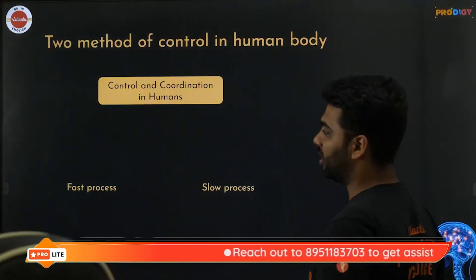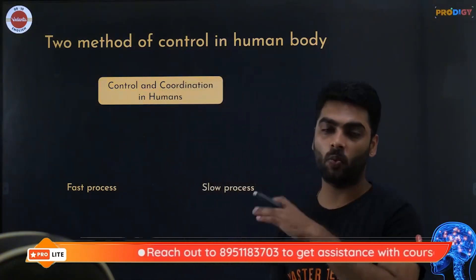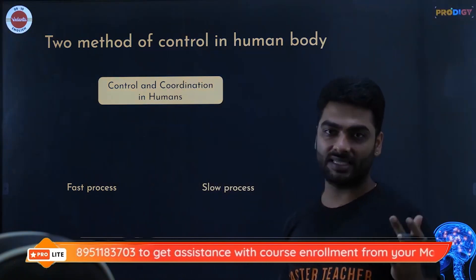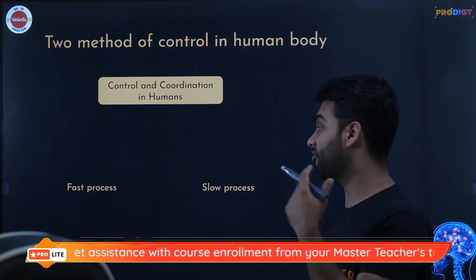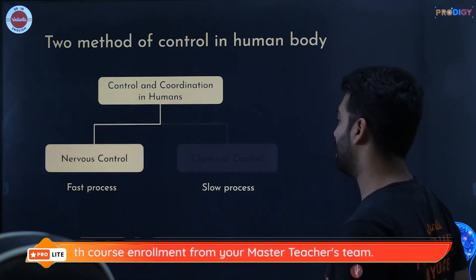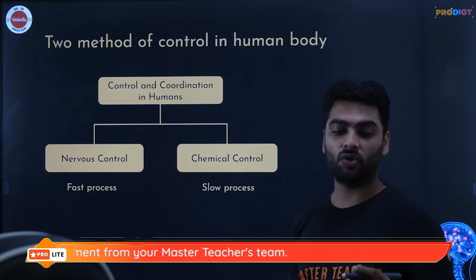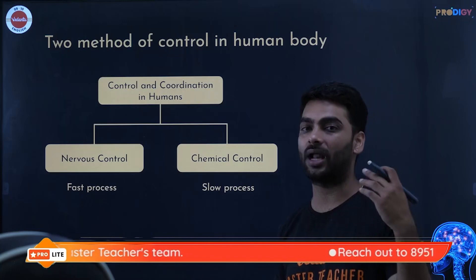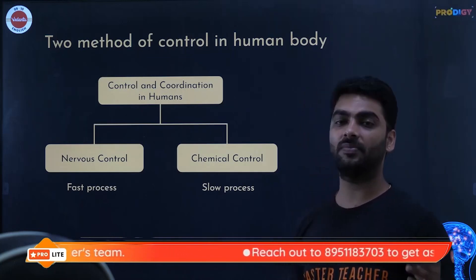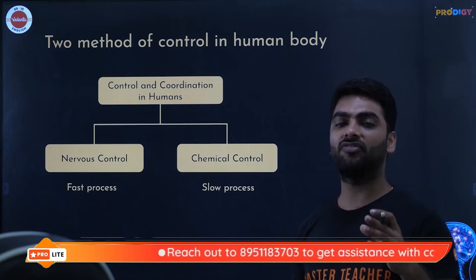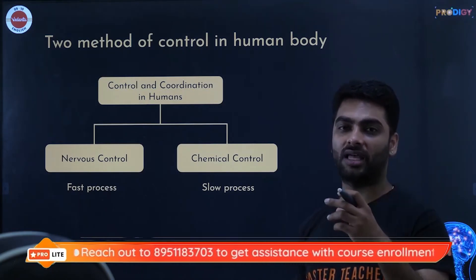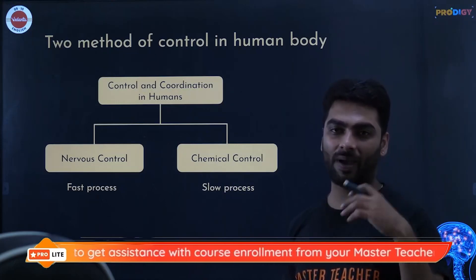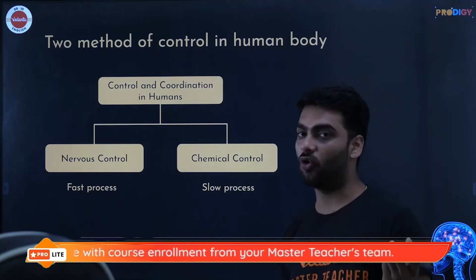When we talk about control and coordination in humans, we have two processes: one is fast and one is slow. The nervous system — central, peripheral and autonomic — is the fast process. Chemical control is the slow process, where we deal with hormones and the endocrine system. The endocrine system consists of endocrine glands: hypothalamus, pineal, thyroid, parathyroid, adrenal gland, pancreas, testes and ovaries.